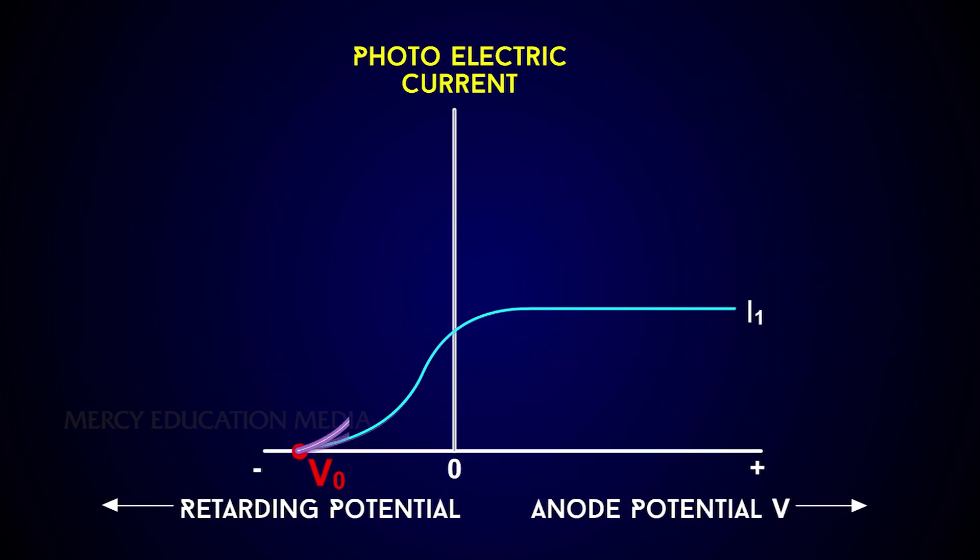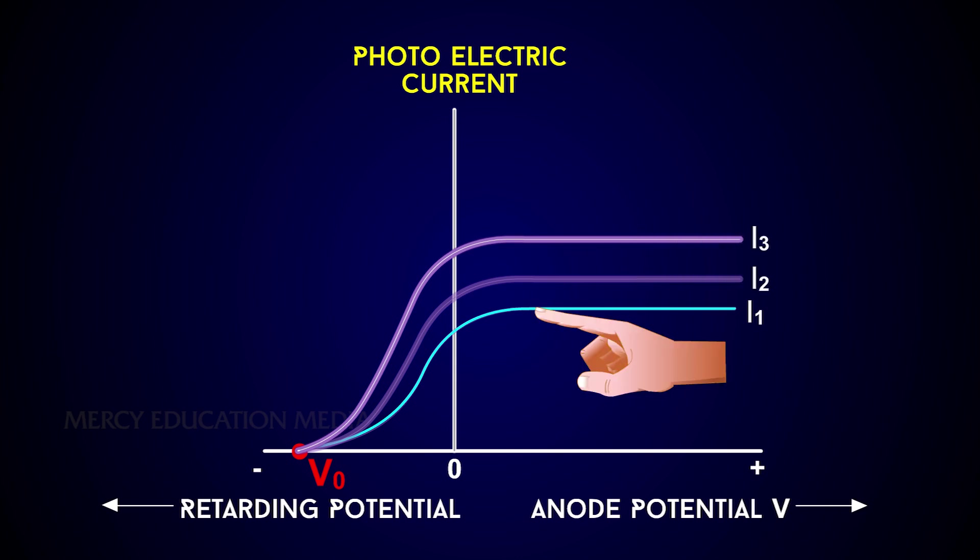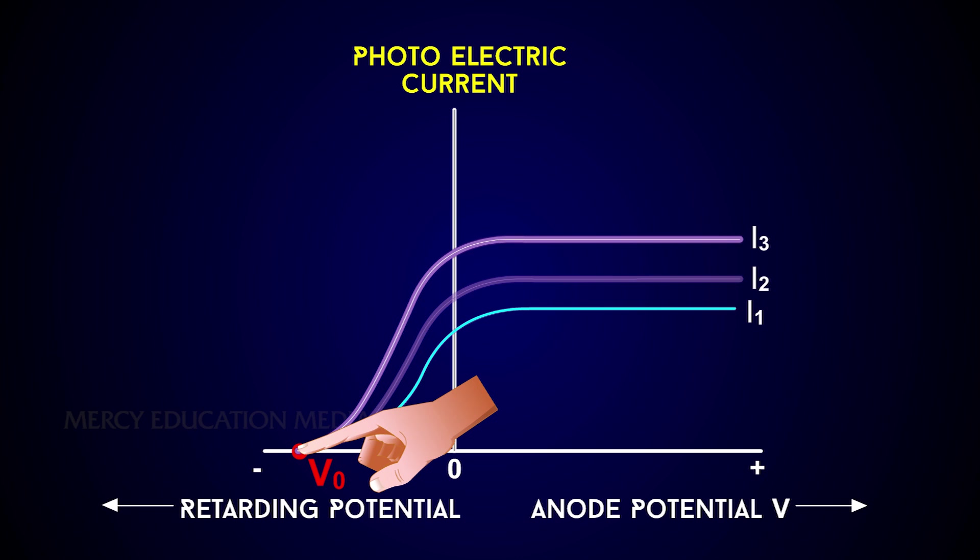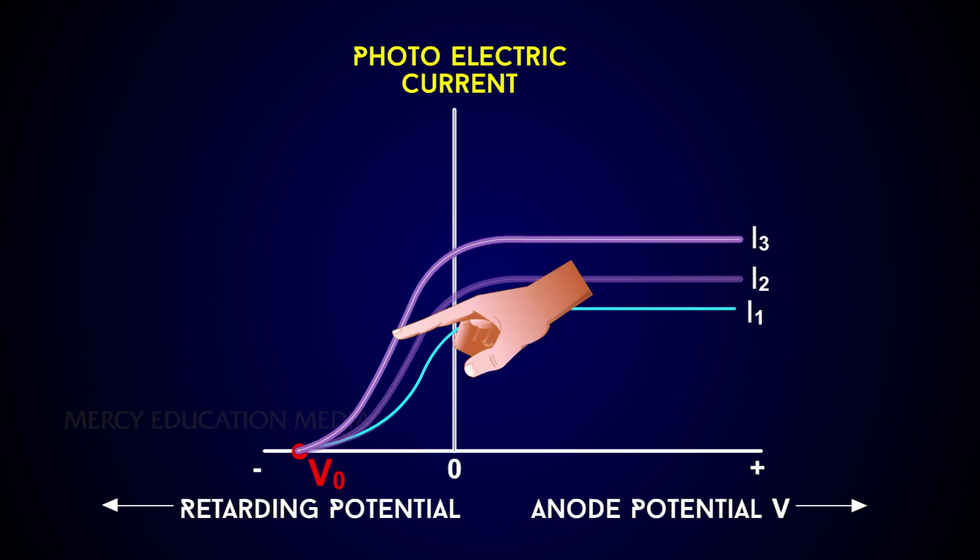The experiment is repeated with the incident radiation of same frequency but of higher intensities I2 and I3. It is found from the graph the saturation currents are proportional to the intensities of the radiation, but the stopping potential remains the same for all the intensities.